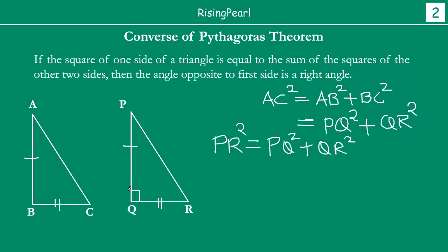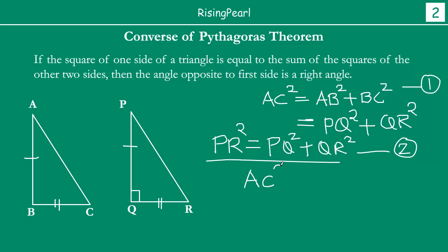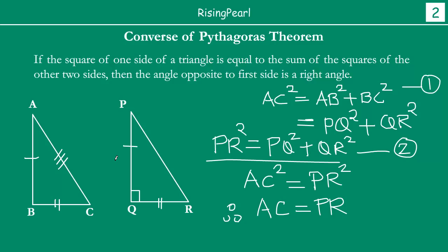In triangle PQR, PR² = PQ² + QR² by Pythagoras theorem. Let's call this condition 2, and what was given earlier as condition 1. The right-hand side of both conditions is the same. In condition 1, AC² = PQ² + QR², and in condition 2, PR² = PQ² + QR². From conditions 1 and 2, we see that AC² = PR², which means AC is equal to PR.